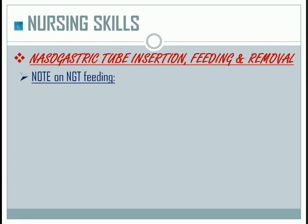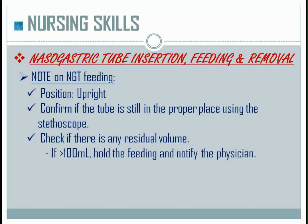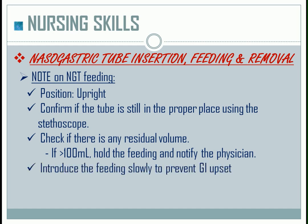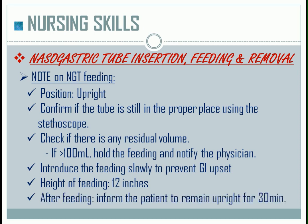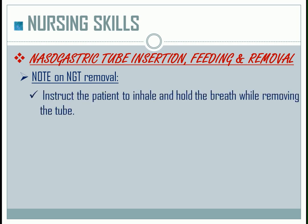Notes on NGT feeding: the proper position is upright. Confirm the tube is still properly placed using a stethoscope. Check for any residual volume — if greater than 100 ml, hold the feeding and notify the physician. Introduce feeding slowly to prevent GI upset. The height of the feeding bag should be 12 inches. After feeding, inform the patient to remain upright for 30 minutes. Lastly, document the procedure. For NGT removal, instruct the patient to inhale and hold their breath while removing the tube.